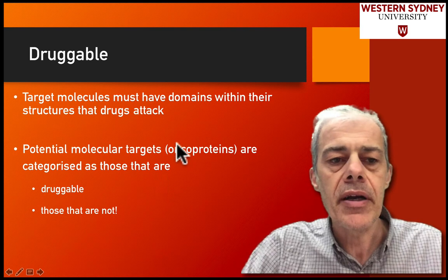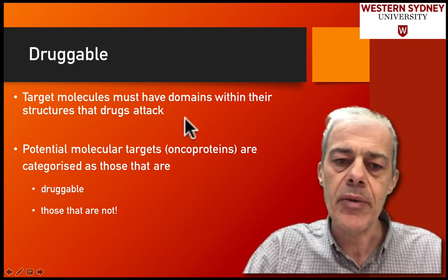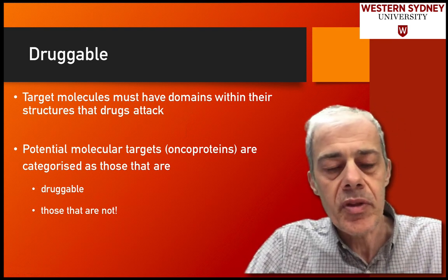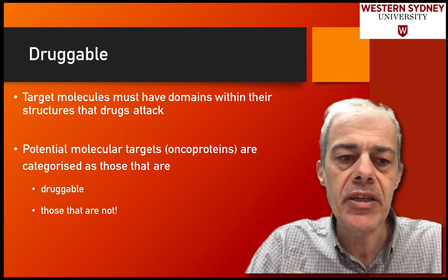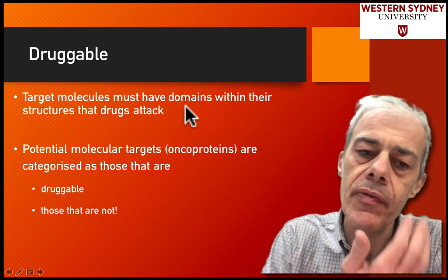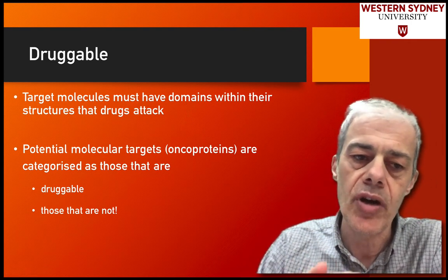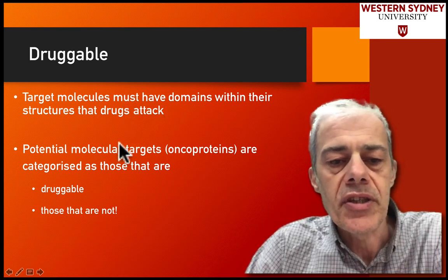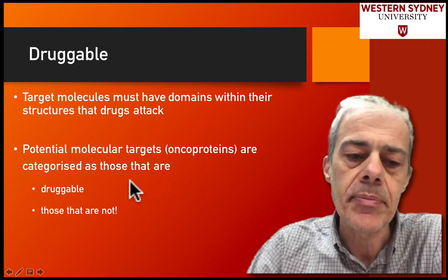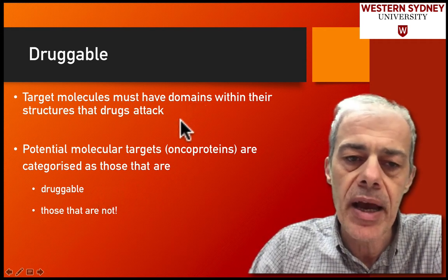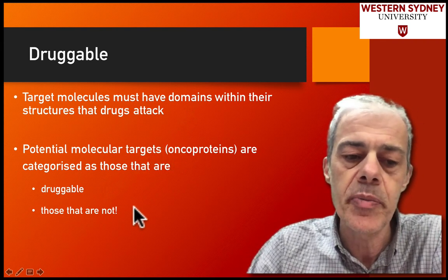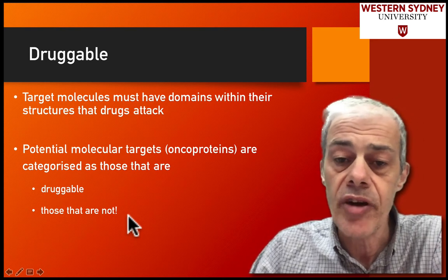We've identified a target protein that we think we'd like to knock out with a drug. Before we can actually do this, the protein structure has to be known and we need to identify whether there's a domain within the structure of that protein which we can attack with the drug. These potential targets — typically our oncoproteins — can be targeted as druggable, meaning they have a domain which the drug can attack, or they are considered not druggable.